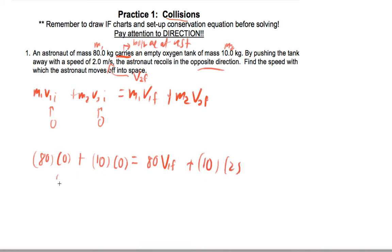So what we end up getting on this side when we work out the numbers is zero equals 80 V1F plus 20. When we isolate V1F, we're going to actually end up getting negative 0.25 meters per second.